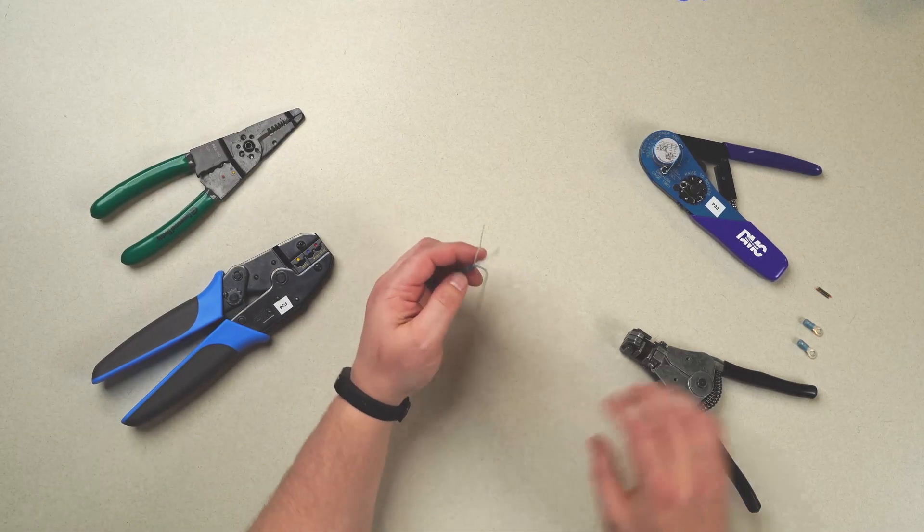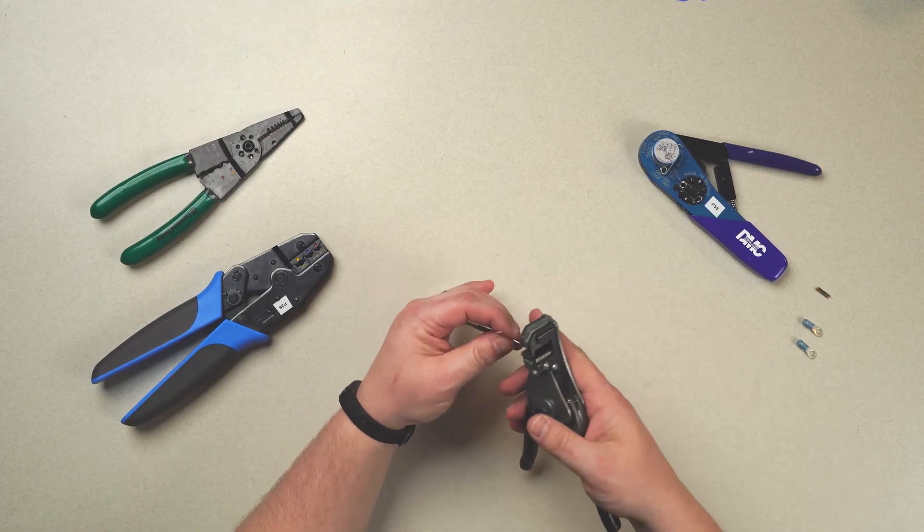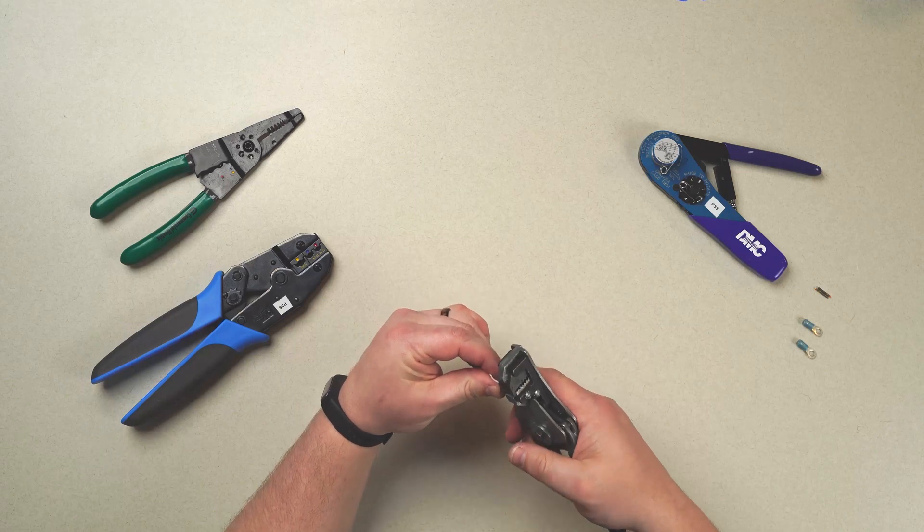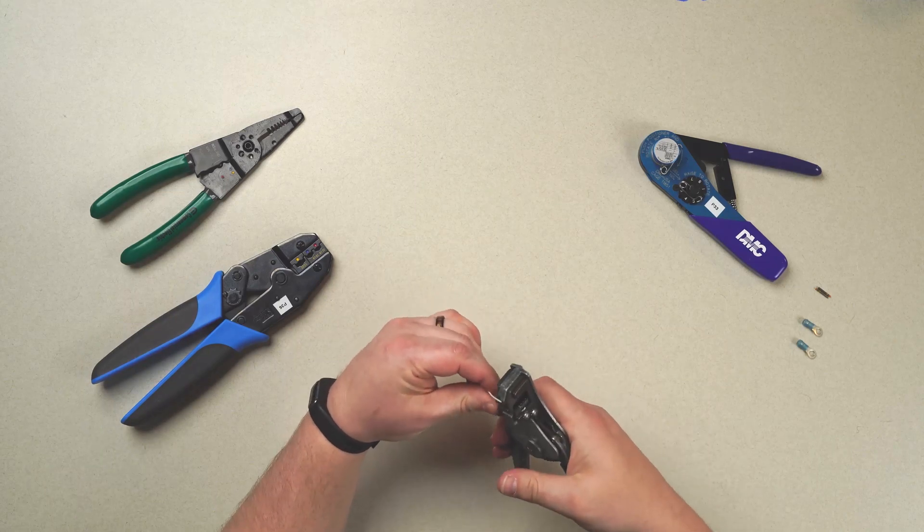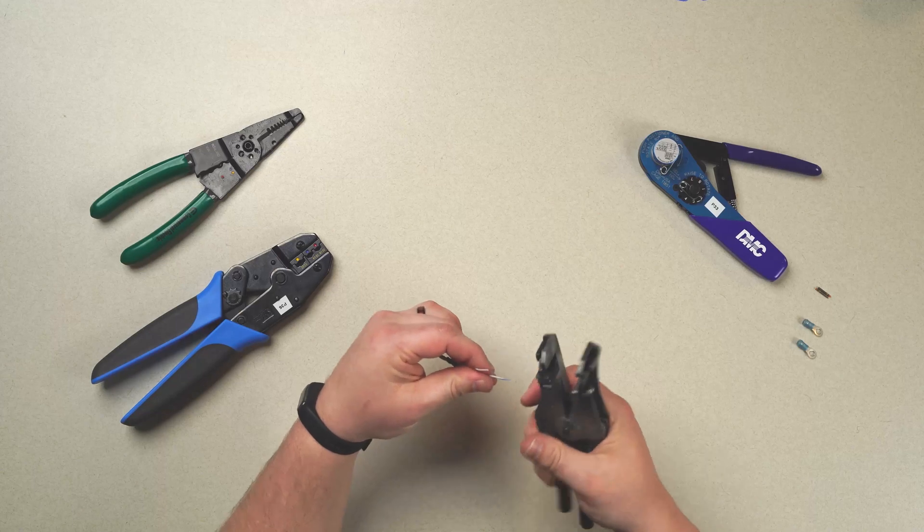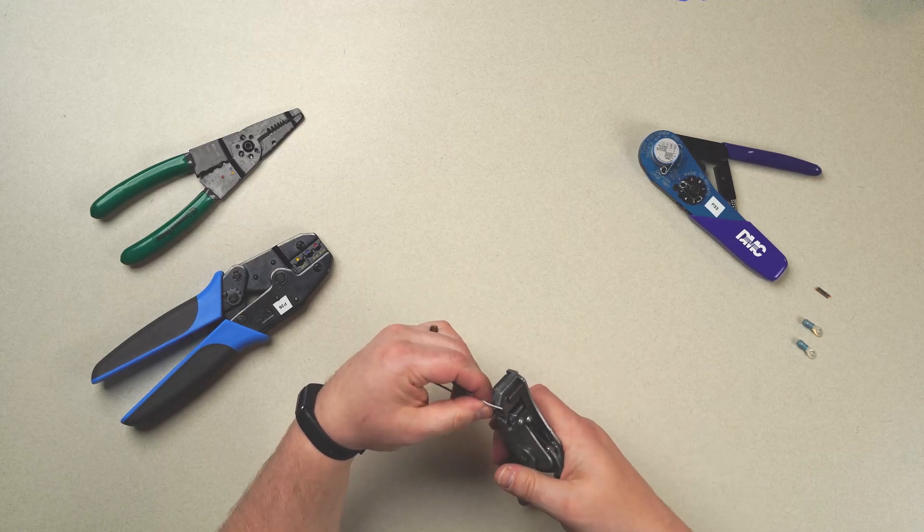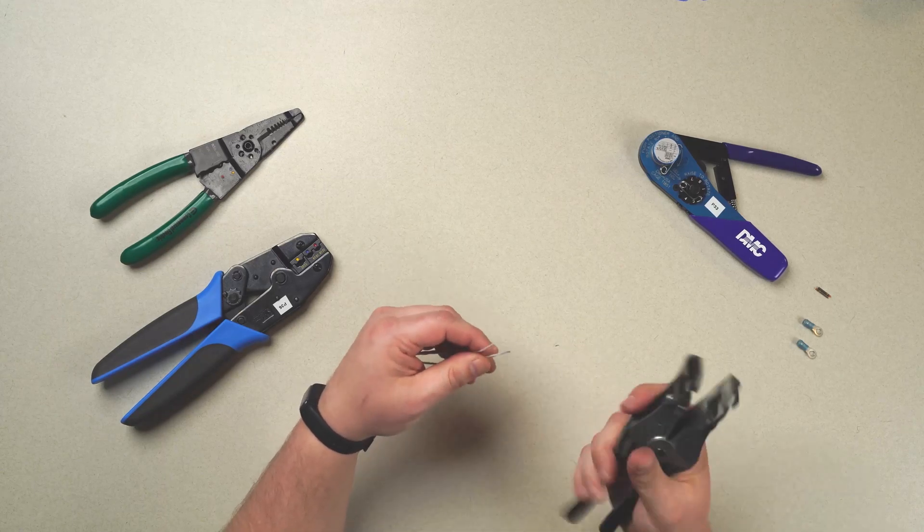Okay, so terminating your wire is going to go as follows. We start by stripping the wires. And what you're approximately looking for is about an eighth inch of exposed wire, making sure you don't over strip.